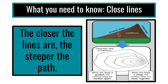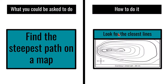Remember: the closer the lines, the steeper the path. Looking at the closest lines here, this would be the steep side of the hill. This is the fastest route, but you're climbing from elevation 80 all the way up to 214 very quickly — that's a steep climb. Over here is a nice gradual walk by comparison.